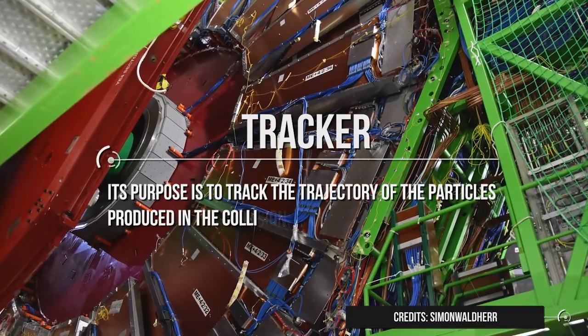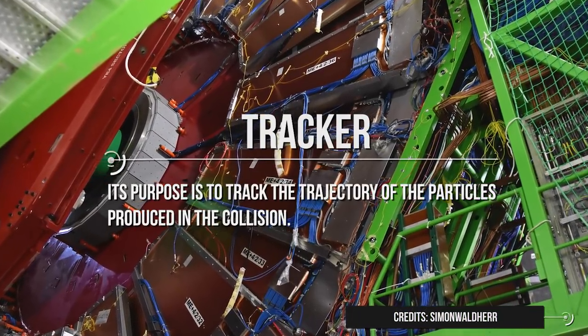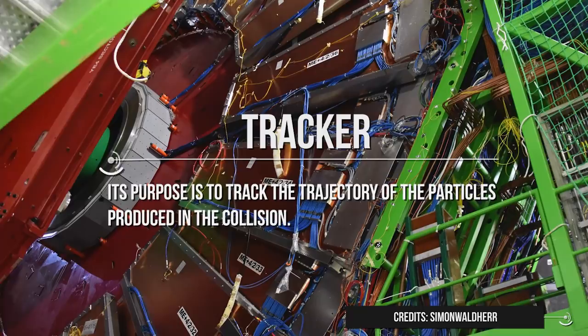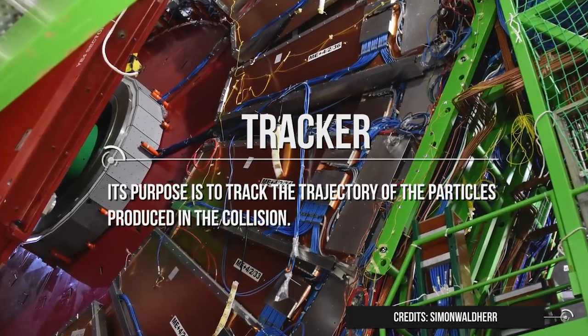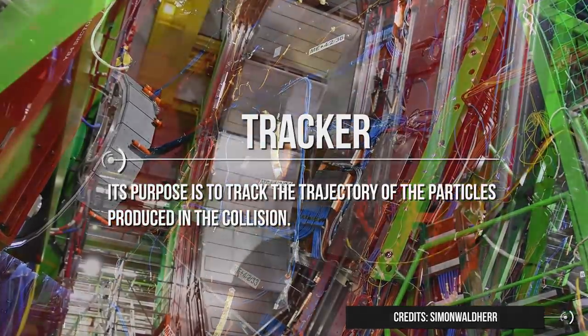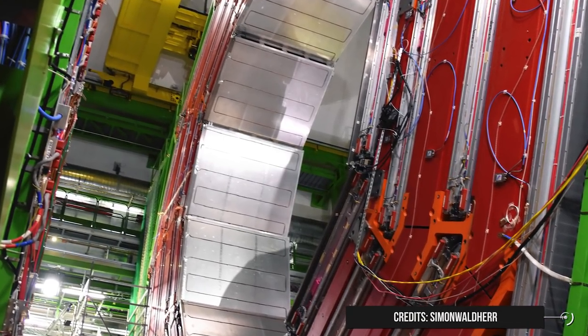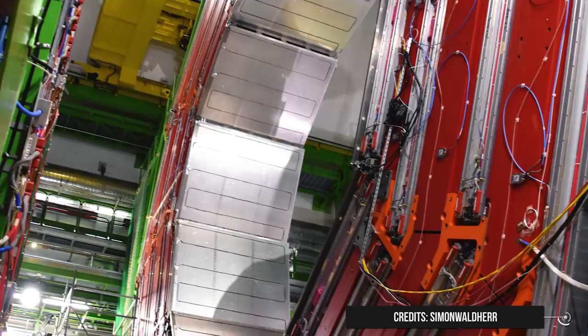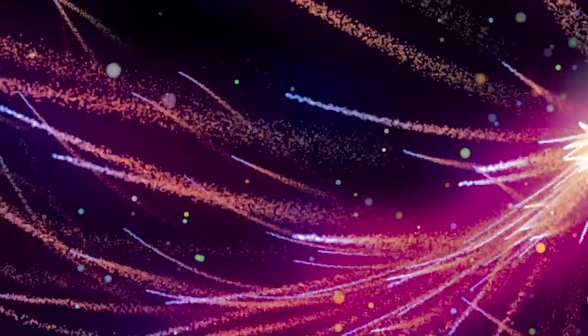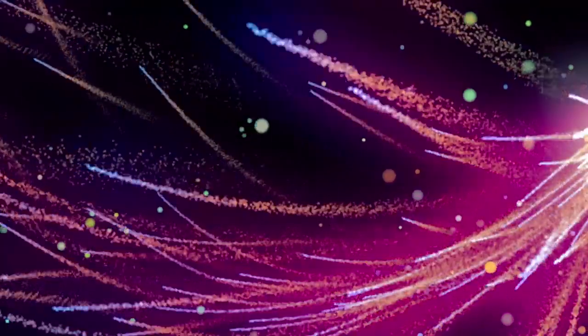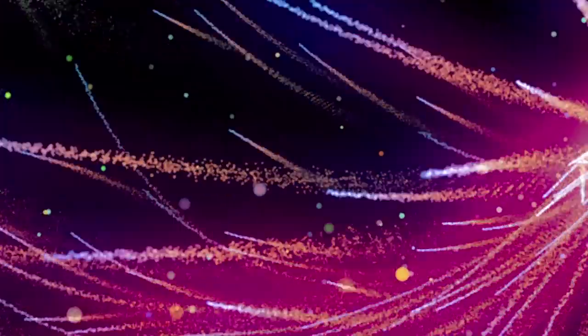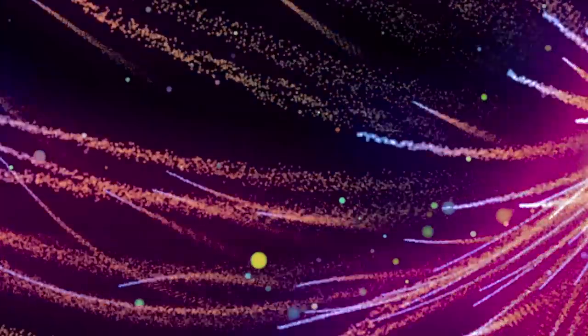Each of the 4 detectors consists of several sub-detectors, each of them having a different purpose. For example, one of the subsystems of CMS is the tracker. Its purpose is to track the trajectory of the particles produced in the collision. This tracker consists of several silicon layers, and when a charged particle hits one of these layers, it leaves a trace. By checking all the hits left by the particle on the layers of the tracker, it is possible to reconstruct its whole trajectory from the collision point.